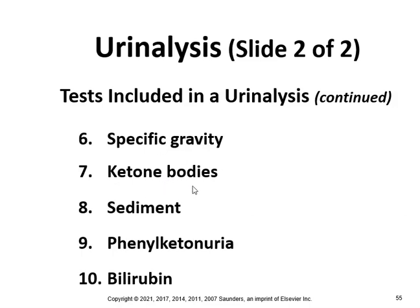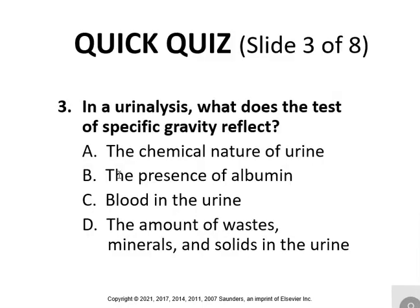Specific gravity reflects all the waste, minerals, and solids in the urine. Ketone bodies appear when the body breaks down fat. Sediment indicates abnormal particles. Phenylketonuria indicates a lack of enzyme, usually found in infants. Bilirubin results from hemoglobin breakdown. These are all the components you look for in a urinalysis. Specific gravity reflects the amount of waste, minerals, and solids in the urine.